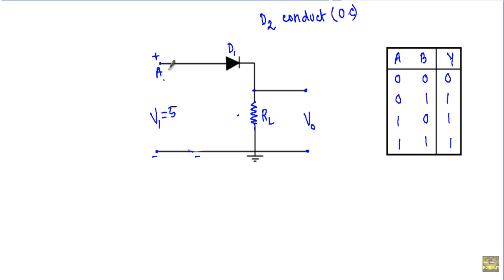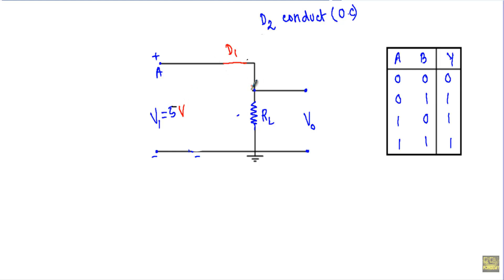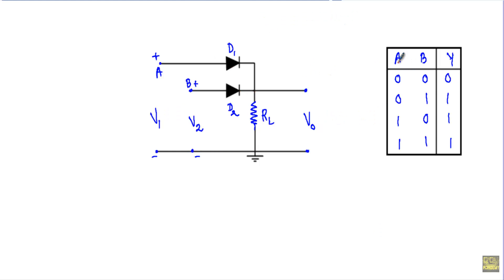With D2 removed, V1 is at 5 volts. The positive terminal of V1 is connected to the P side of diode D1 and the negative terminal is connected to the N side, so the 5 volts will drive diode D1 into forward bias. Assuming D1 is an ideal diode, I can replace it with a short circuit. With D1 replaced by a short circuit, I am applying 5 volts across the output terminals, so our output voltage will be equal to 5 volts, which is logic 1.